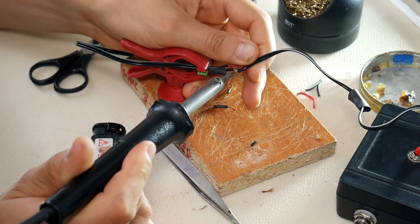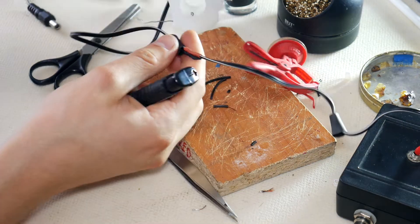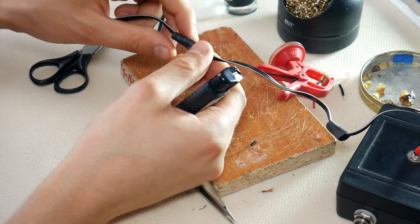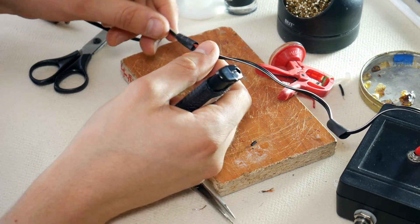Solder together the other wire and install a heat shrink tube at the connection. Slide the heat shrink tube halfway over the connection because from the other side we'll put another tube.